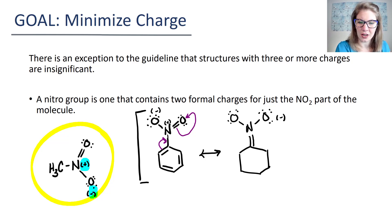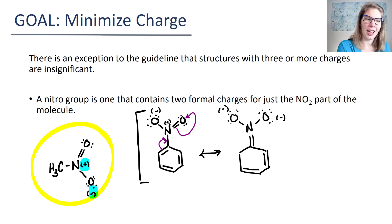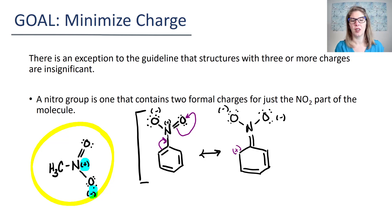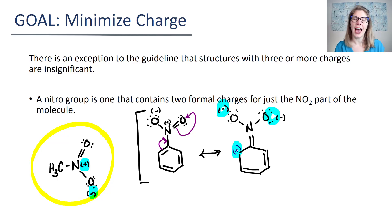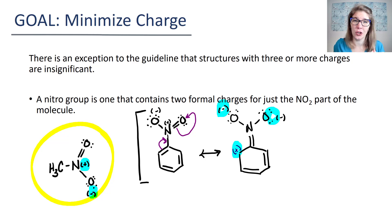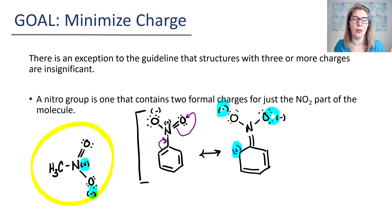There are plenty of lone pairs on those oxygens that are negative. The new part is that we have a positive formal charge, so now we have three atoms that have formal charges. This is because nitro is special — nitro on its own already has two. So when you're asked to minimize formal charge, just know that the rule of once you hit three formal charges we're calling it insignificant, that doesn't apply for the nitro group.